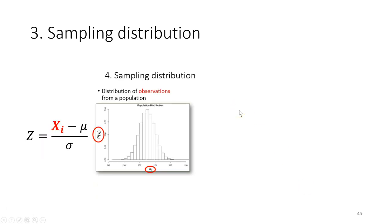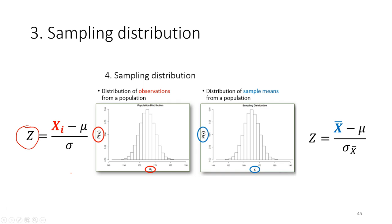If you know the standard error of the mean and the mean, and your data is normally distributed, then you can calculate the probability. We can calculate the z-value based on the observation distribution and refer to the standard normal z-table to get the probability estimate. If the data is normally distributed we can also calculate the probability for a sample, not only for the population.